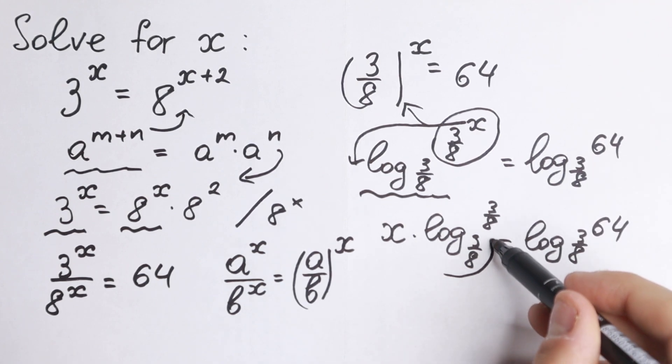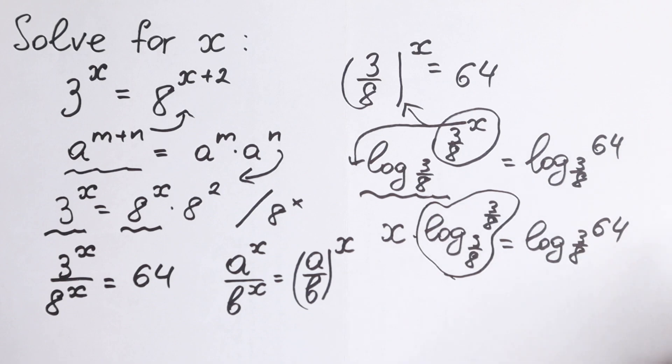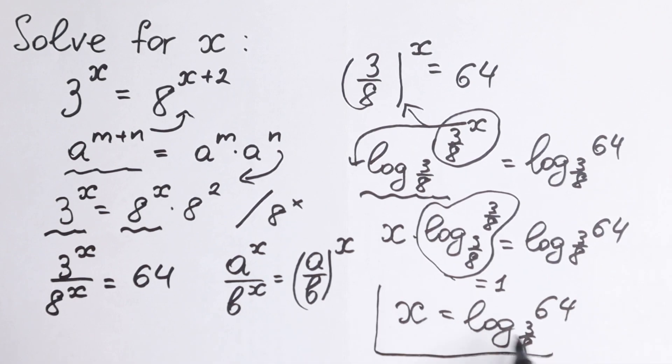Right here, this is the main log property: log base a of a equals 1. So on the left-hand side, we'll have only x equal to log base 3/8 of 64. And this is our answer.